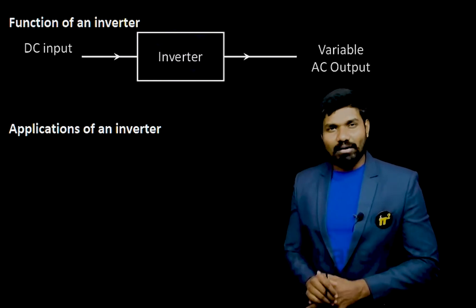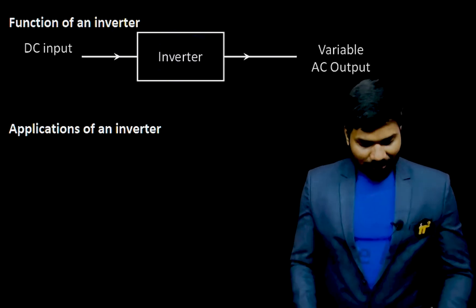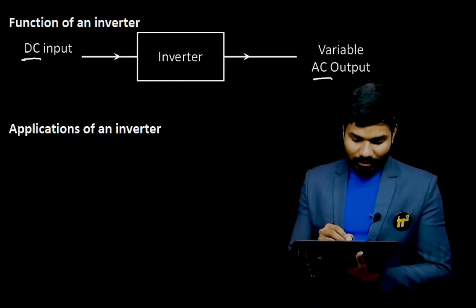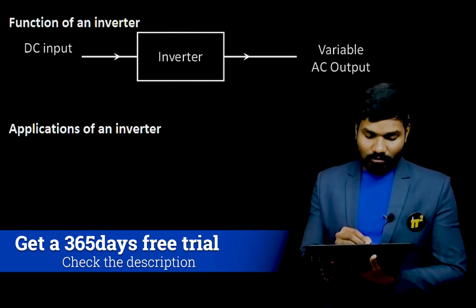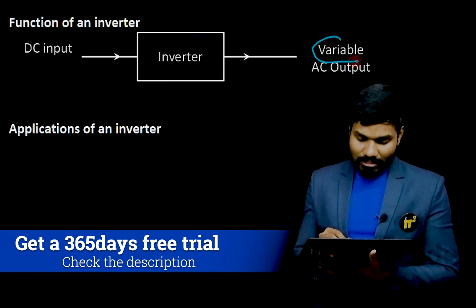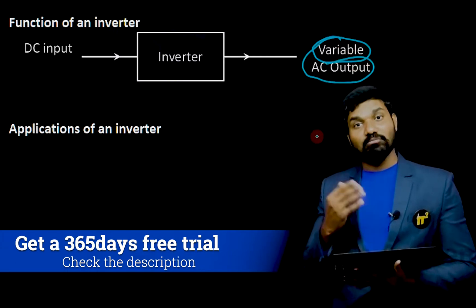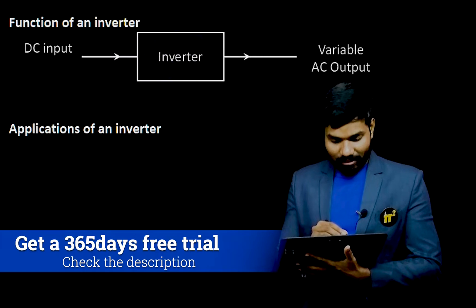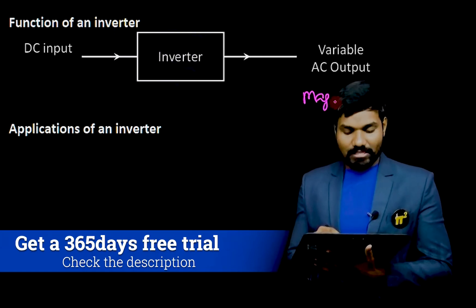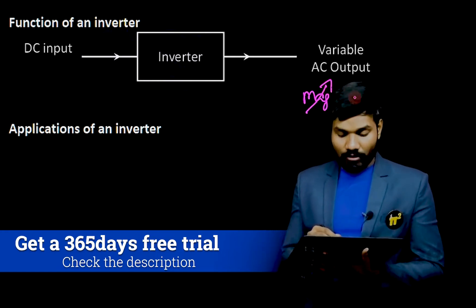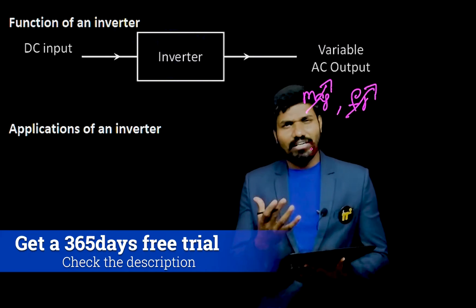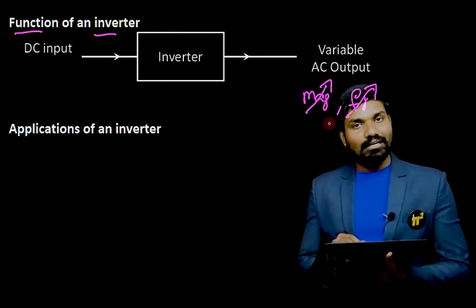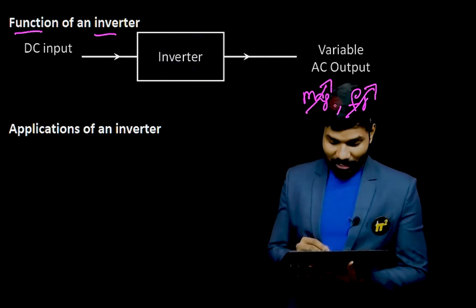What is the function of an inverter? The block diagram is very clear — it converts DC to AC. To be more precise, it is converting DC to variable AC. With the help of this inverter, we can get any value of AC. I can control the AC voltage — magnitude can be controlled as well as frequency can be controlled. We can get any desired values. Both magnitude and frequency.